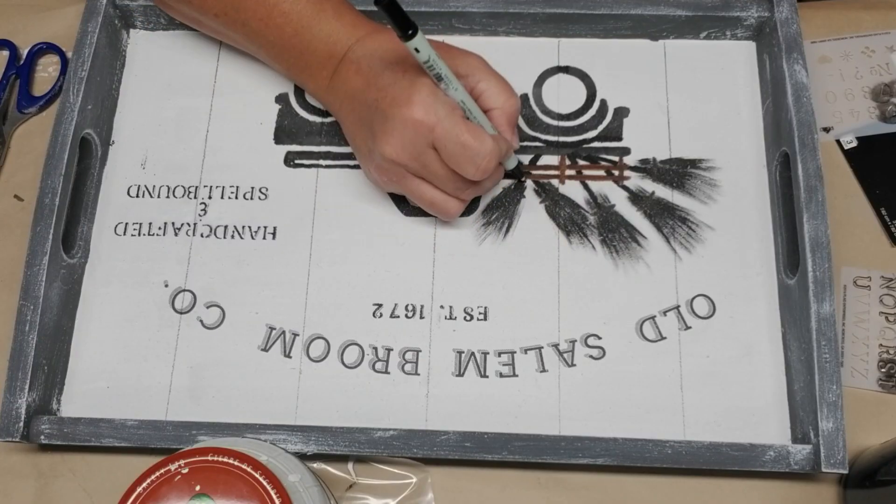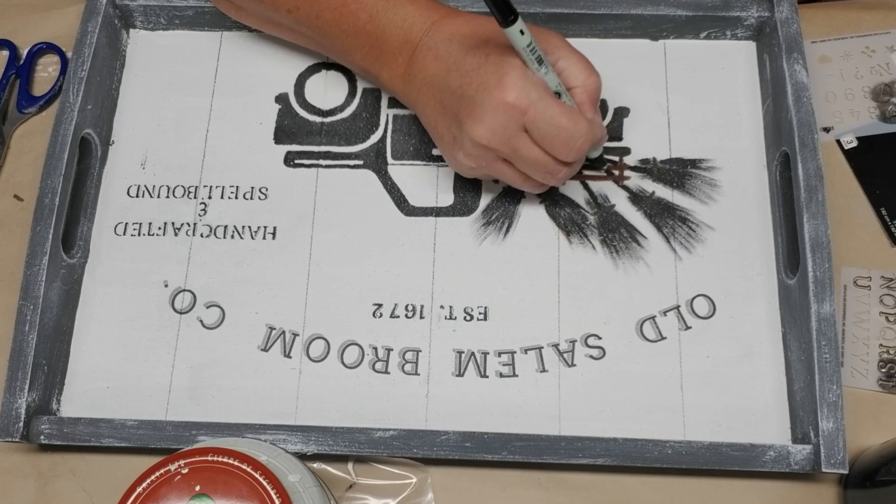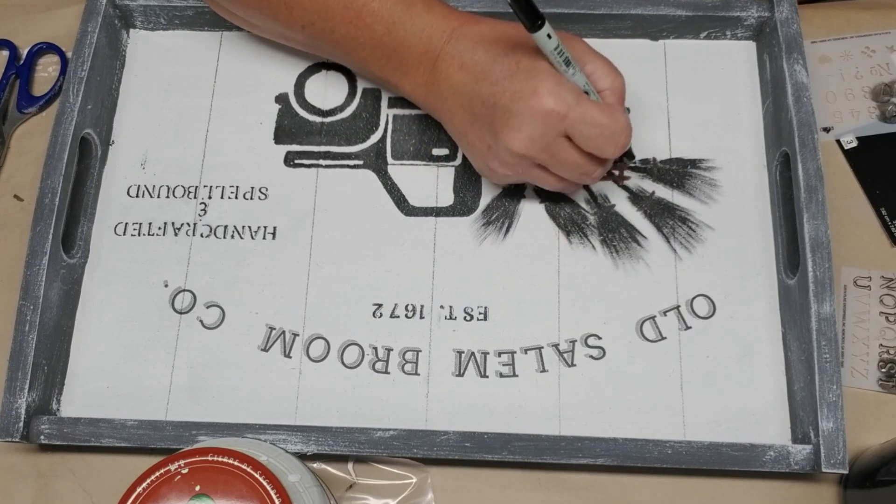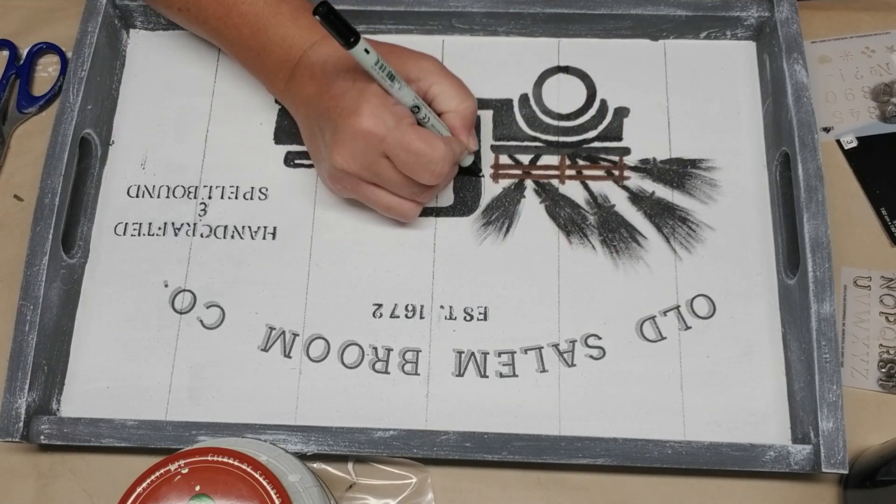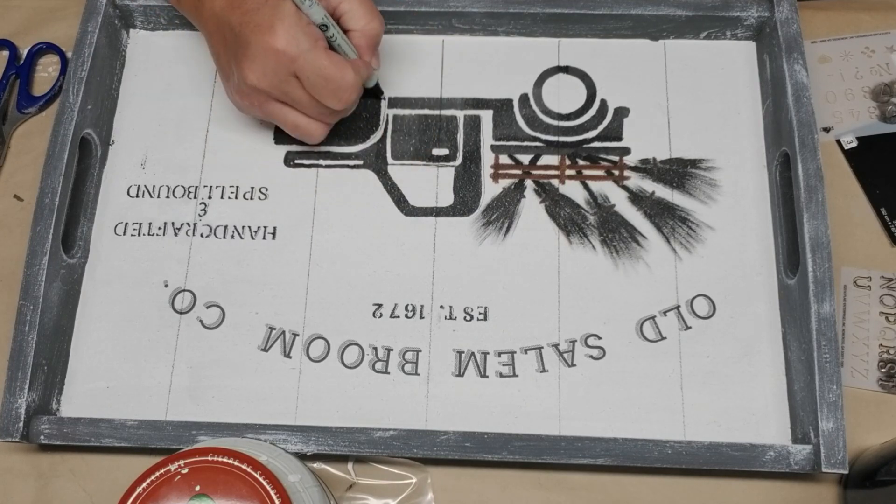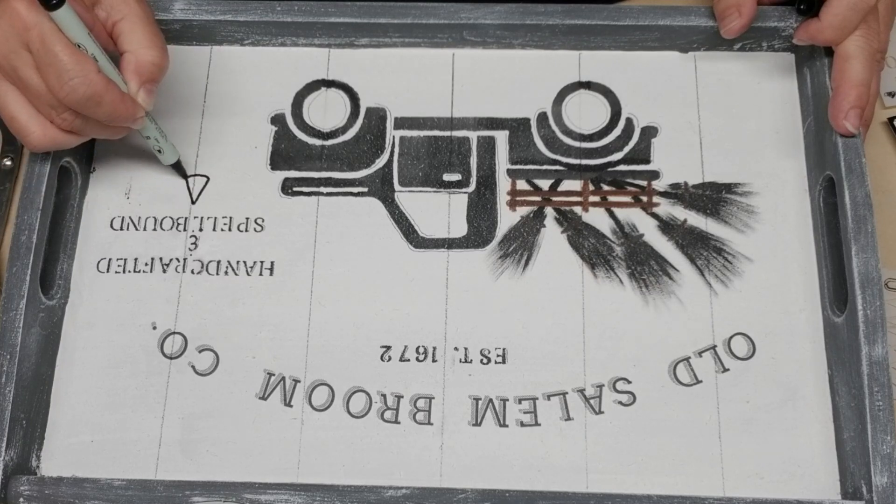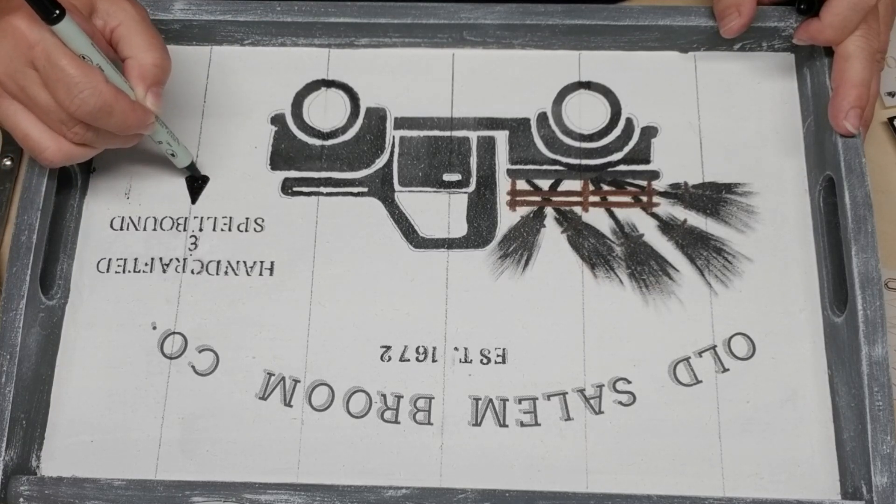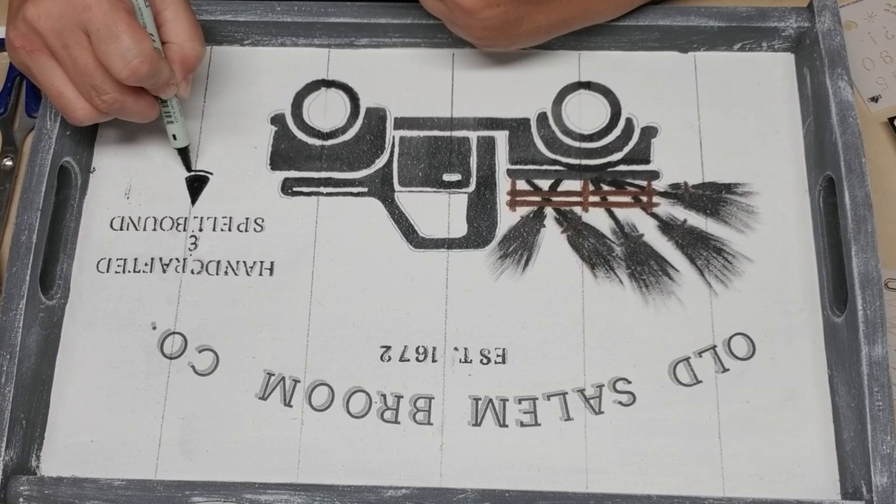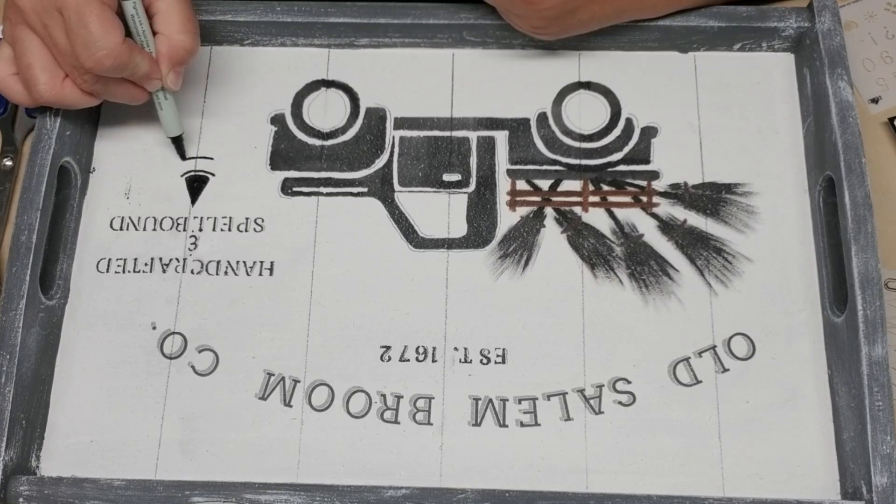I also decided to do the same effect with the brooms and the truck just to give them more of a 3D look. I really love the way this is turning out but I still thought that there needed to be a little something underneath those tiny letters so I decided just to freehand a little witch's hat.